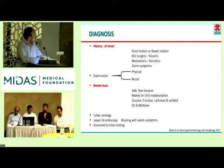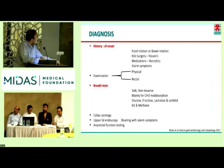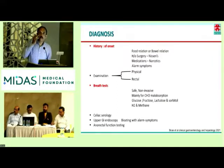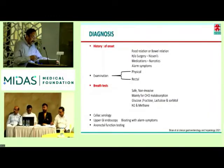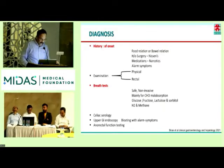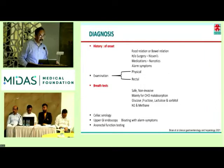For history, once you have this presentation, find out whether it is food-related, what are the bowel habits, history of surgery, medicines, and most importantly — alarm symptoms. Physical examination and rectal examination are important. Breath test — I think we have been using breath test much less. These are the group of patients where breath test should be used mainly to confirm carbohydrate malabsorption. You may have to do celiac serology, endoscopy if they have alarm symptoms, and anorectal function studies if they have altered bowels.